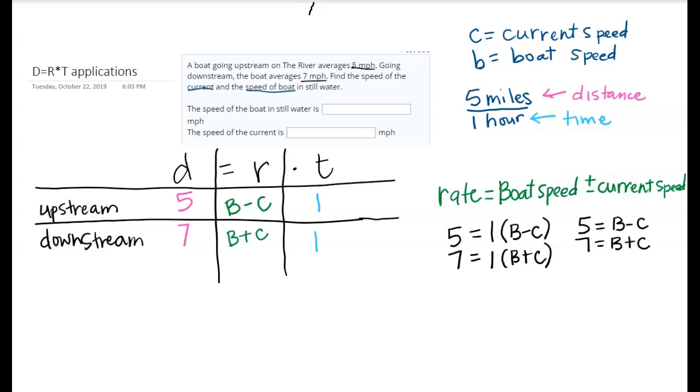Here are my two equations. Now I'm going to use the elimination method to try and solve for my boat speed and my current speed. I can see that if I add the equations together just like they are, then I would be able to eliminate the C's, which is great. That will leave me with 5 plus 7 is 12 and then 1B plus 1B is 2B.